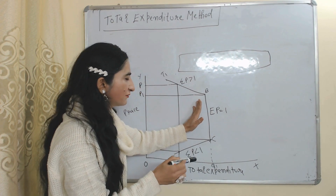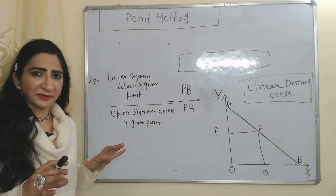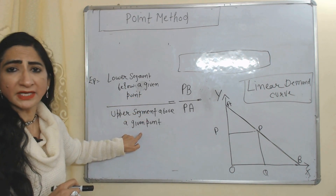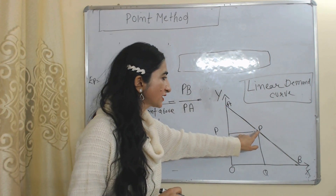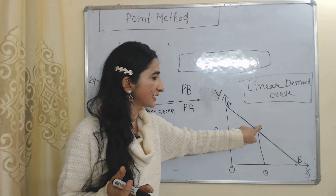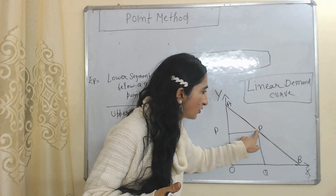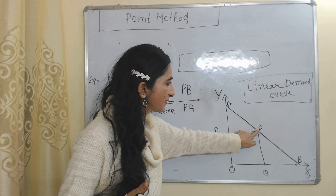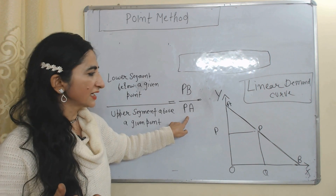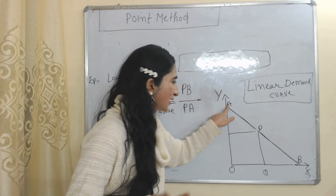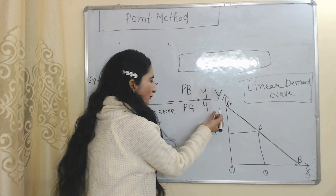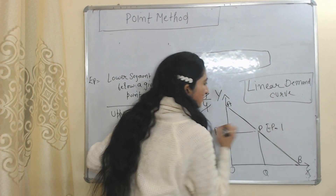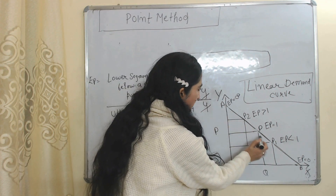Now we will see the point method. The formula is: lower segment below the given point divided by upper segment above the given point. We have a linear demand curve. Suppose our given point is P — we want to calculate price elasticity at this point. The lower segment below P is PB and the upper segment above P is PA. Here PB equals PA, so if PB is 4 then PA is also 4 and they cancel, meaning at point P, price elasticity of demand equals 1.